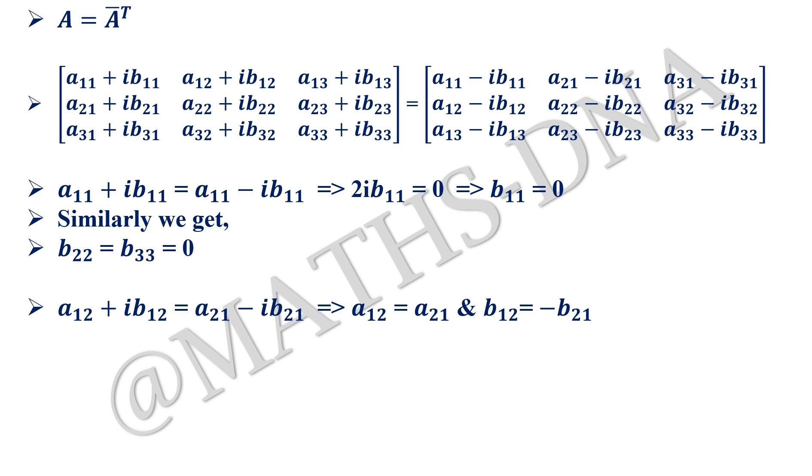a₁₂ + ib₁₂ is equal to a₂₁ - ib₂₁. This implies that a₁₂ and a₂₁ should be equal and b₁₂ should be equal to minus of b₂₁. See, we are finding the total number of entries that are independent and that are dependent because independent will give us the dimensions of the matrix. So in general, aᵢⱼ will be equal to aⱼᵢ and bᵢⱼ will be equal to minus bⱼᵢ.